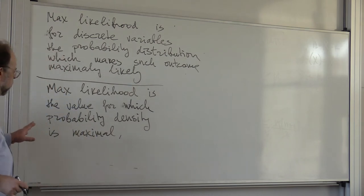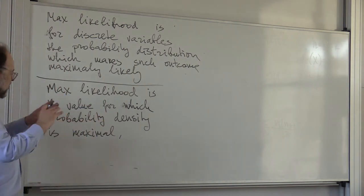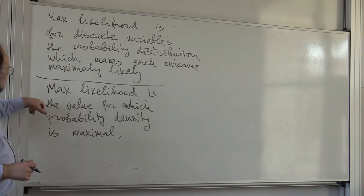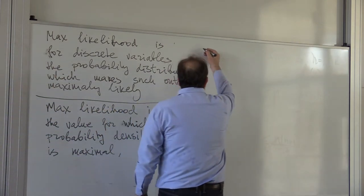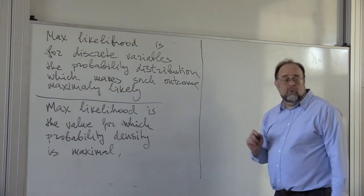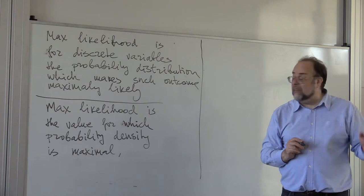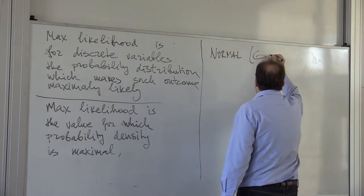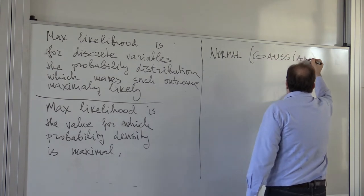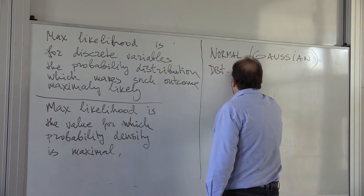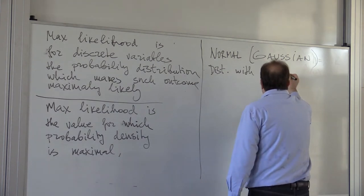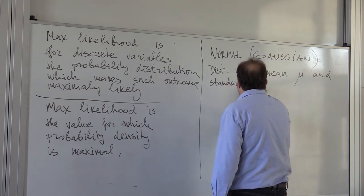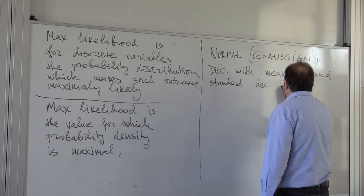And you can see, if you approximate this continuous random variable by discretizing the domain and integrating over each little piece, that these two are in perfect agreement. So what is the probability of the outcome that we got, assuming that the errors are normal? So first of all, what is the normal distribution — also called the Gaussian distribution — with mean mu and standard deviation sigma?